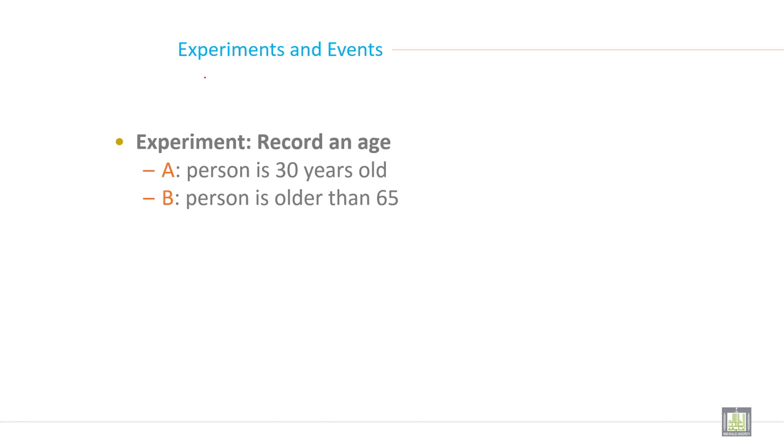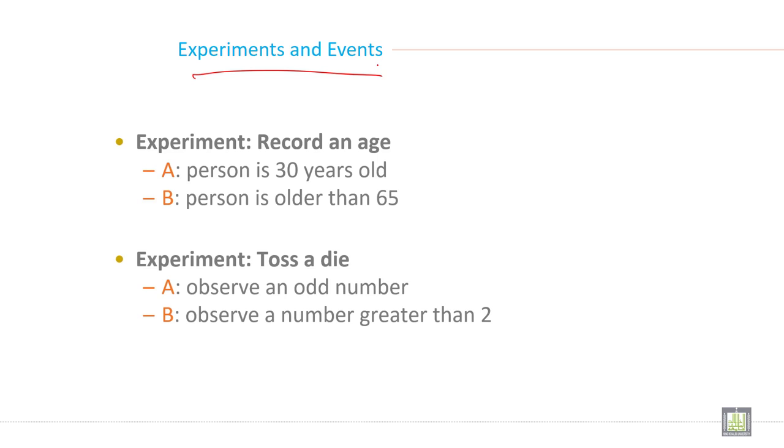Experiment and event. Experiment A: person is 30 years old. B: person is older than 65. Experiment like toss a die. A: observe an odd number and B: observe a number greater than 2. This is just an example of experiment when you are recording age and when you are tossing a die.